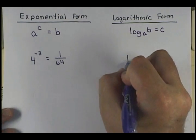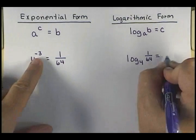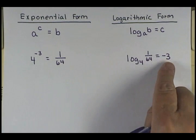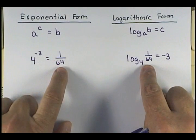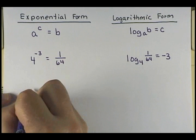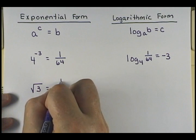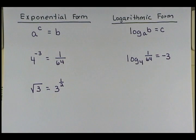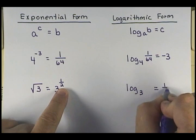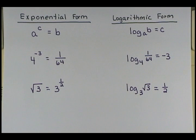Where does your power have to go? It goes over to the other side. How could you check yourself? Base to power: 4 to the negative 3 equals what I'm taking the log of. Now another example: the square root of 3 equals 3 to the 1/2. What's your base here? 3. What's your power? 1/2. And it's going to have to equal the square root of 3. Your base is still 3, your exponent is 1/2.